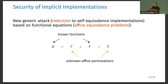We also propose a new generic attack more suitable to the implicit framework, based on the idea of reducing the implicit implementation to a self-equivalence one. Since self-equivalence implementations are more efficient than implicit implementations, if you can do this reduction there is no benefit from using implicit implementations. Also, if you can do this reduction, all attacks that apply to self-equivalence implementations could then be applied to the implicit one.